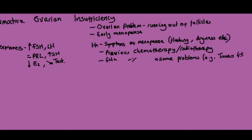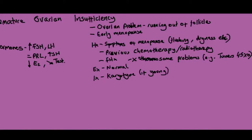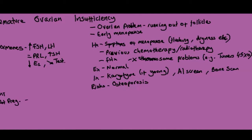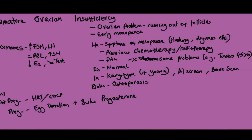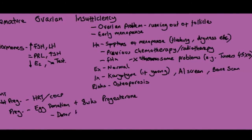There may be a past history of chemotherapy or radiotherapy which can damage the ovaries. A family history is relevant, and a common cause is X chromosome problems such as Turner's — remember Turner's can be mosaic, so a woman may have the Turner's genotype without the phenotype. Examination is usually normal. Investigations include karyotype if young, an autoimmune screen, and a bone scan due to osteoporosis risk from low oestrogen. If she wants to become pregnant, egg donation and IVF are required, followed by progesterone for 8–10 weeks.